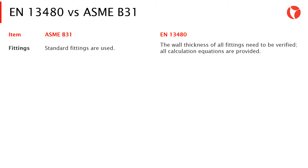Regarding fittings, for the ASME B31 code, standard fittings are used. Meanwhile, for EN 13480, the wall thickness of all fittings needs to be verified, and all calculations and equations are provided within the code.